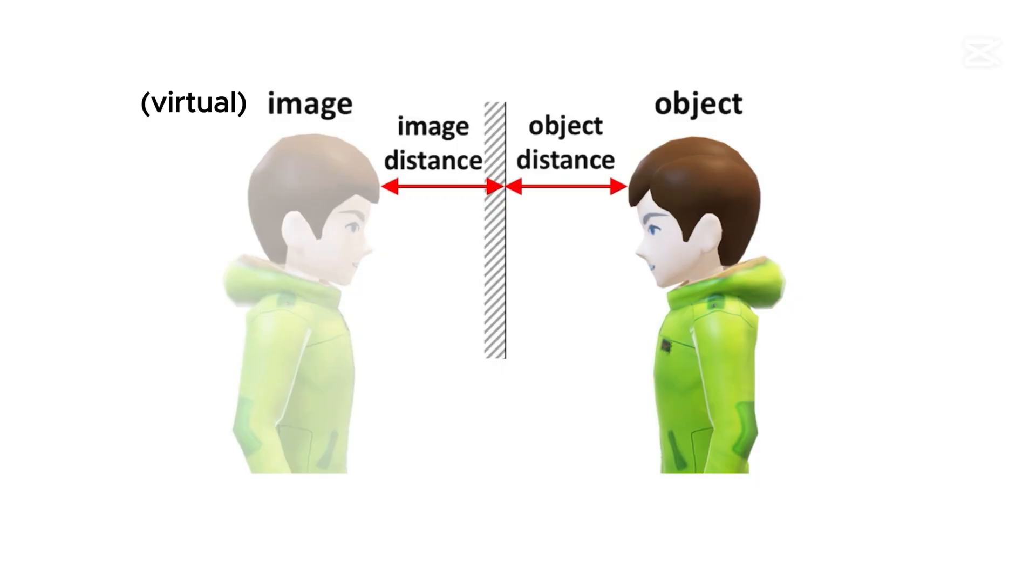So what's the explanation behind this? Let's look at this handsome avatar here. He's standing at a distance in front of the mirror. He's the object. And his image is standing at the same distance behind the mirror. We know that the object distance is equal to the image distance.